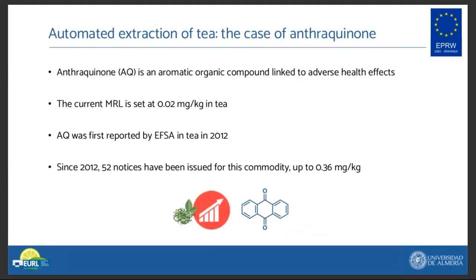After this brief introduction, I will discuss the problem we were facing with the extraction of anthraquinone from tea. Anthraquinone, as many of you may know, is an organic compound of interest linked to adverse health effects in humans. Currently, its maximum residue limit is set at 20 ppb in tea within the European Union. The presence of anthraquinone in tea was first reported by EFSA in 2012, and ever since, 52 notices have been issued for this commodity, plus several more notices in other commodities such as paprika. The reported concentrations reached as high as 360 ppb, exceeding almost 20 times the current MRL.